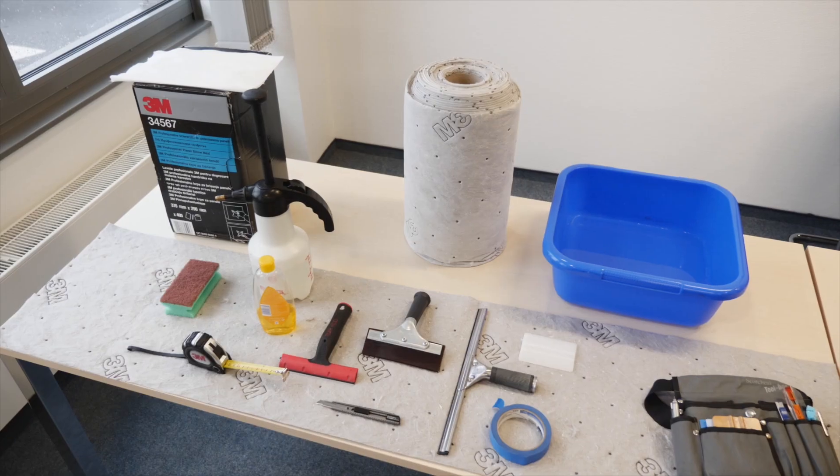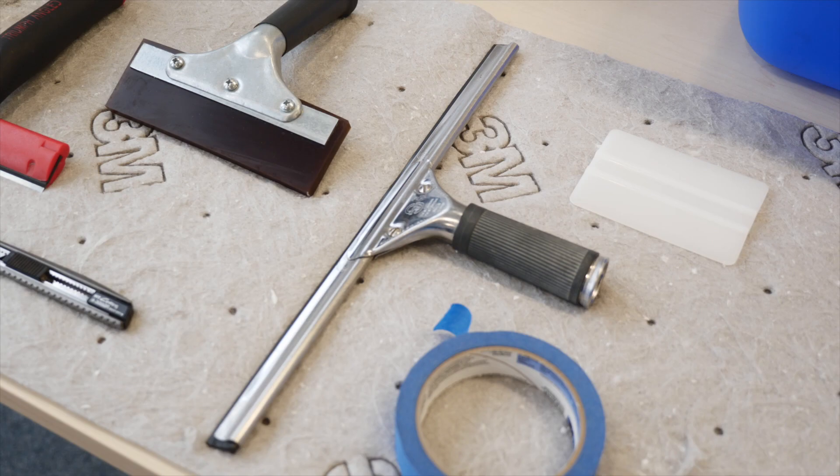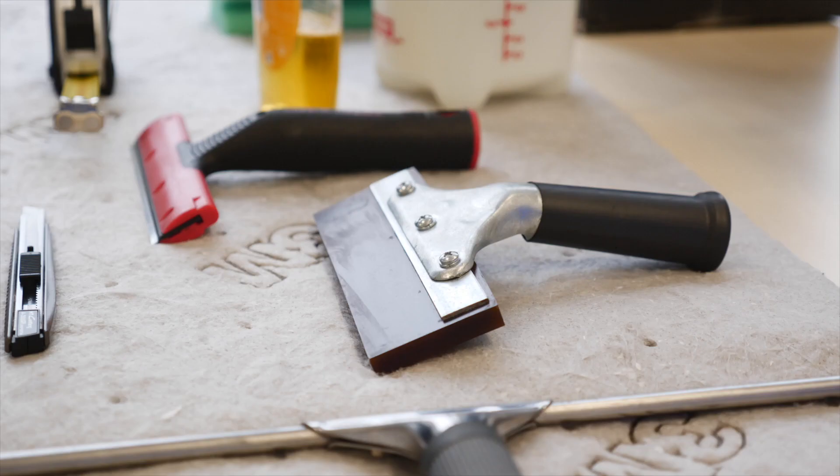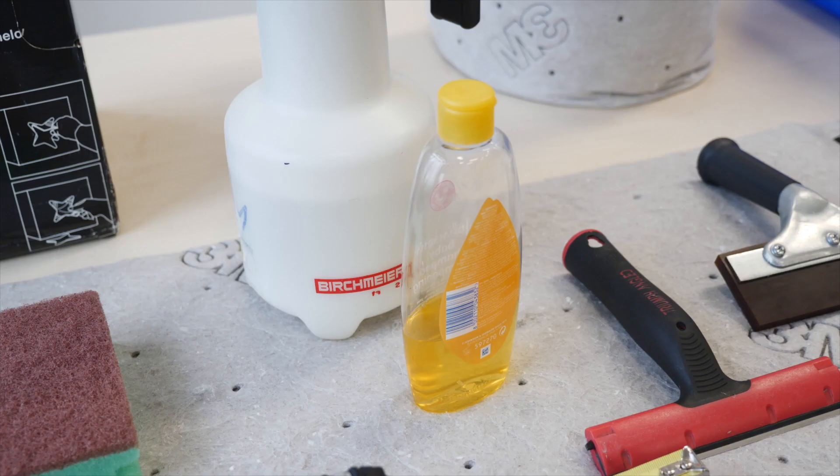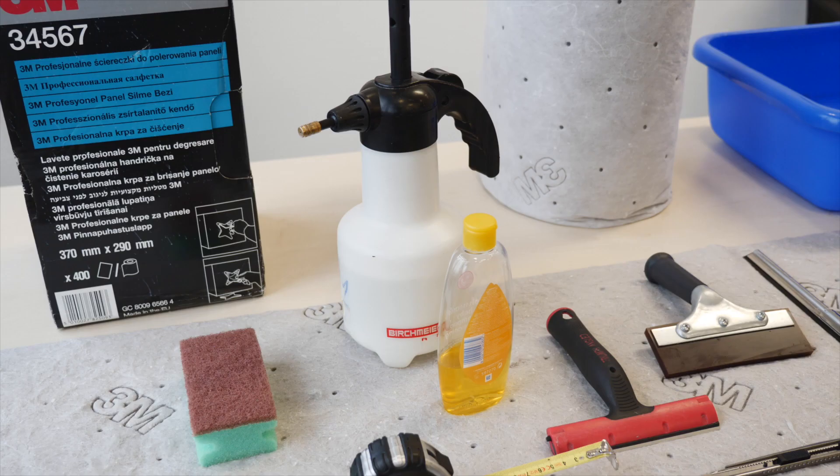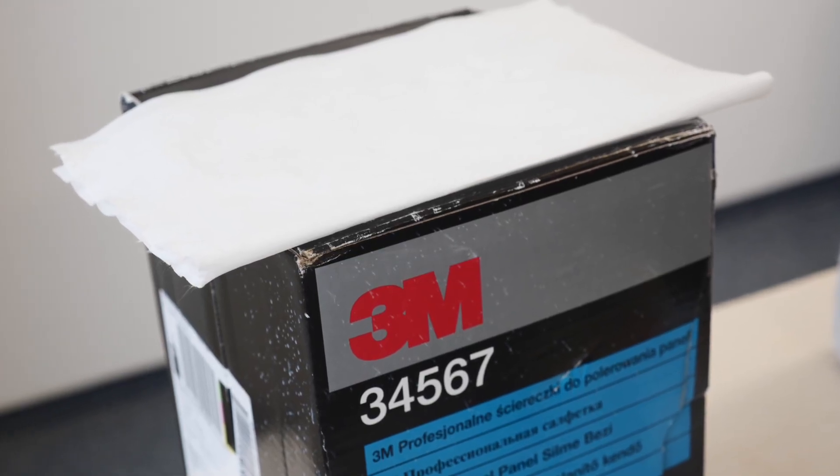Before you start installation, you must ensure that you have all the correct tools required for the job. In particular, a rubber window cleaning squeegee, a rubber window film squeegee with a maximum width of 15 cm, a scraper and stainless steel blades, cleaning and installation solution in a spray bottle, a plastic squeegee and lint-free paper towels. You're now ready to start.